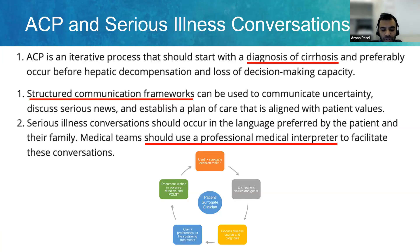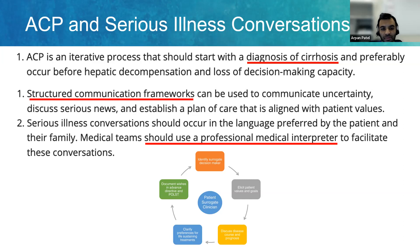The guidance states that advanced care planning should really start at the time of diagnosis of cirrhosis, preferably before patients lose decision-making capacity — because at that point they may not be able to identify their surrogate decision-maker. We advocated for using structured communication frameworks for developing care plans aligned with patient values. When delivering serious news like telling someone they're not a transplant candidate, making sure they understand that conversation and using a medical professional interpreter if there are communication barriers.